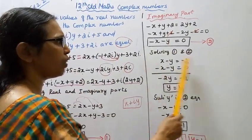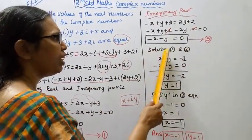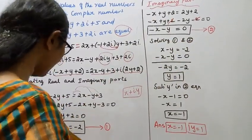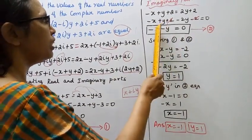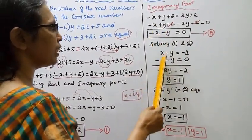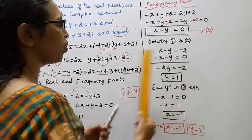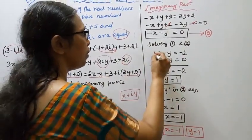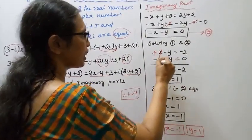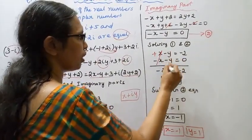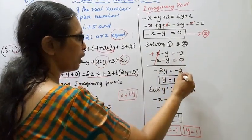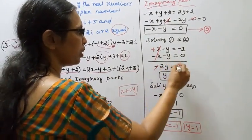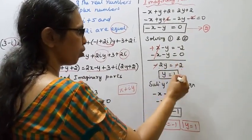Solving equations 1 and 2 together: equation 1 is x minus y equals minus 2, equation 2 is minus x minus y equals 0. Adding both equations, x and minus x cancel. We get minus 2y equals minus 2, so y equals 1.